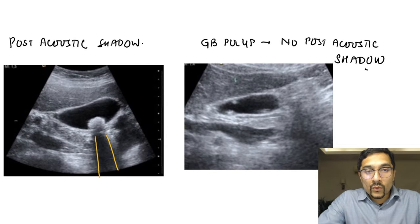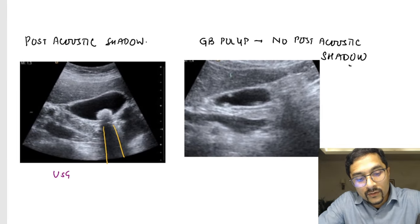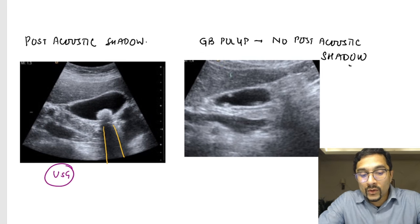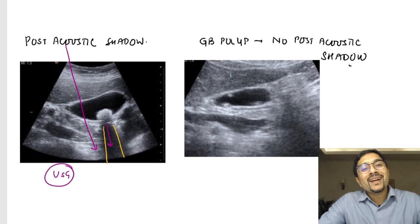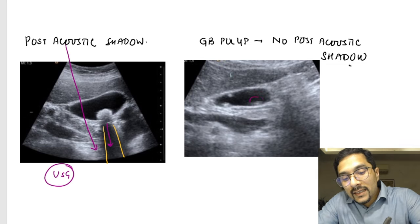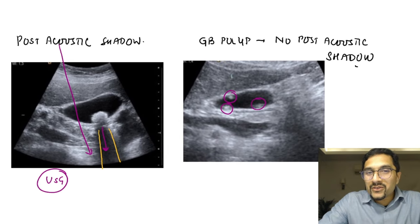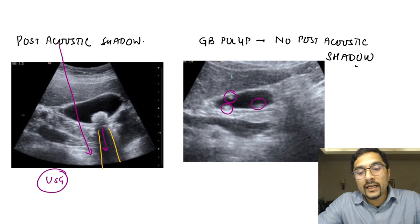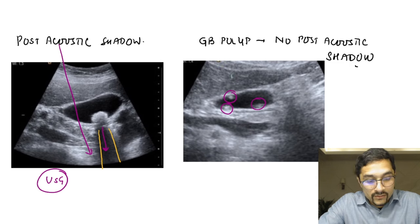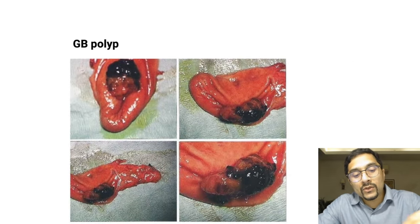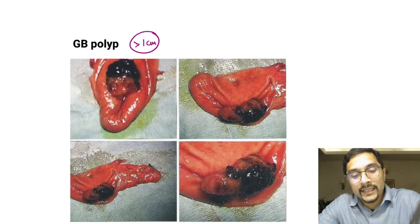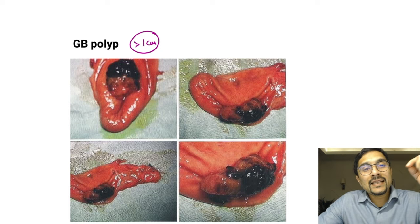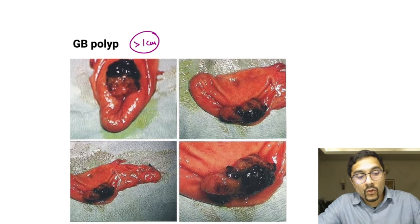The investigation of choice for gallstones is ultrasound abdomen, which shows a stone in the lumen with a post-acoustic shadow — a blackish shadow behind the stone. A polyp in the gallbladder will not show a post-acoustic shadow; that is how we differentiate a stone from a polyp on ultrasound. Gallbladder polyps greater than 1 centimeter (10 mm) are more likely to undergo malignant transformation, and cholecystectomy should be carried out in such patients.